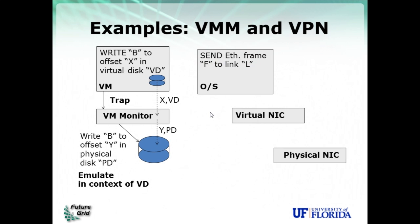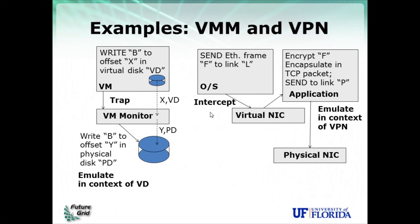In the context of a virtual network, let's look at a virtual private network example. An application sends a message — an Ethernet frame — to a certain link L. This message is intercepted by a virtual network interface established by the virtual network, and reflected to a VPN application running on the same operating system. That application encrypts it, encapsulates it into a packet of another protocol, and sends it out on a physical link — mapping the virtual network link to a physical network link, similar to how the VMM mapped a block of the virtual disk to a block of the physical disk.